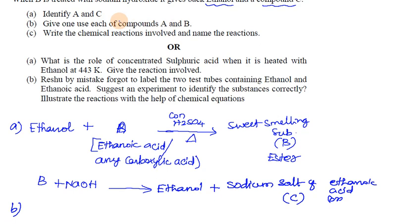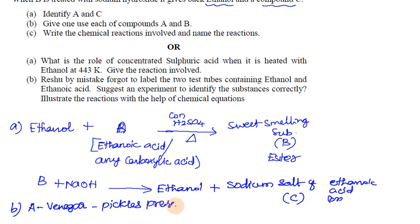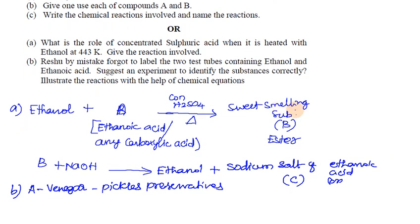Uses of compound A and B: A (ethanoic acid/acetic acid) is used in vinegar and for preserving pickles. B (ester) is used in perfumes and as flavoring agents.